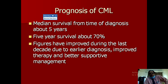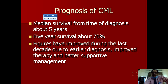The prognosis of CML: five-year survival is approximately 70%, with figures having improved over the last decade due to earlier diagnosis, improved therapy, and better supportive care. In different studies, five-year survival can be as high as 98%. In the IRIS study, the patient remained disease-free for four years at a rate of 98%.